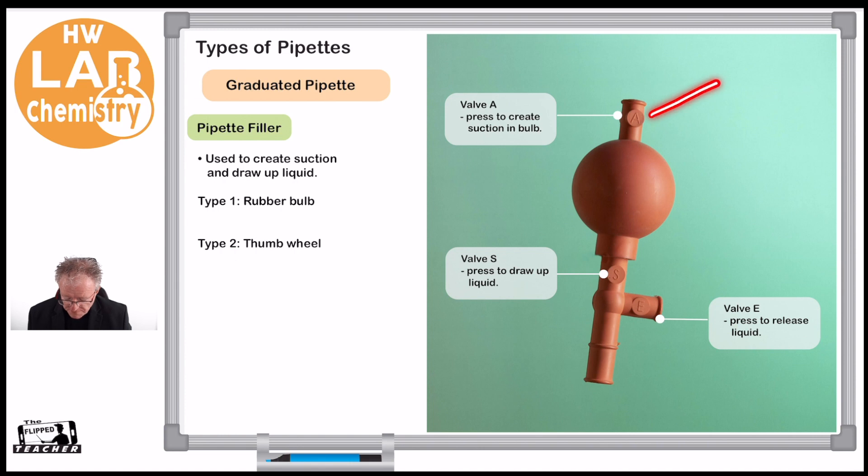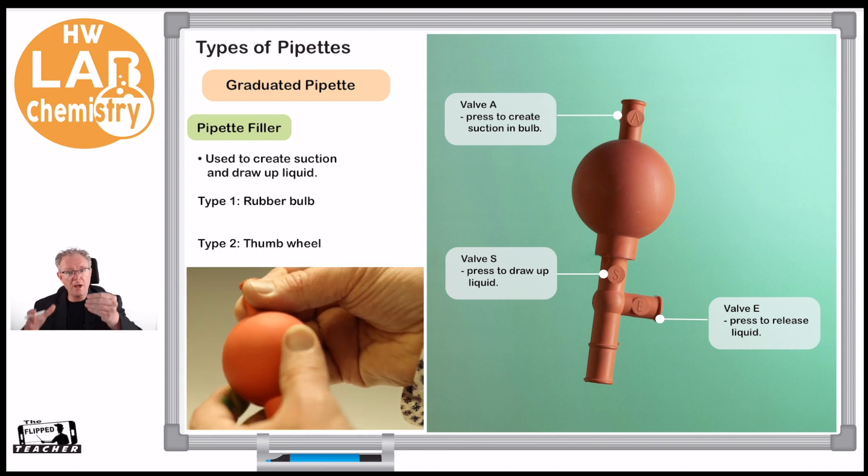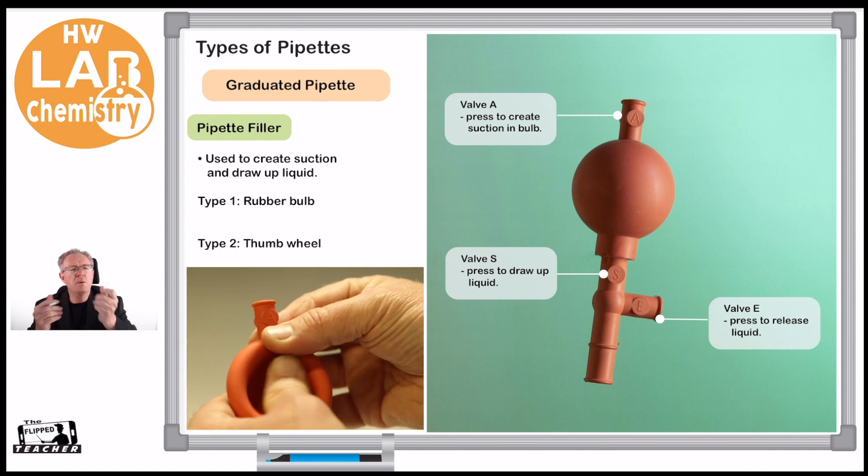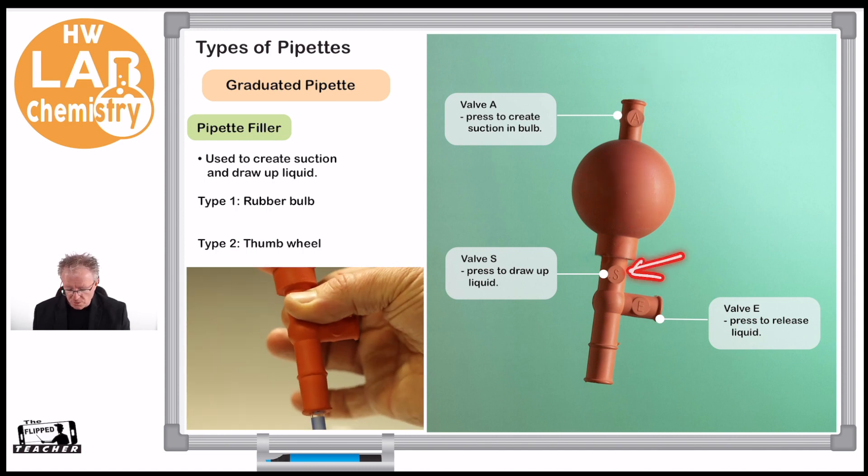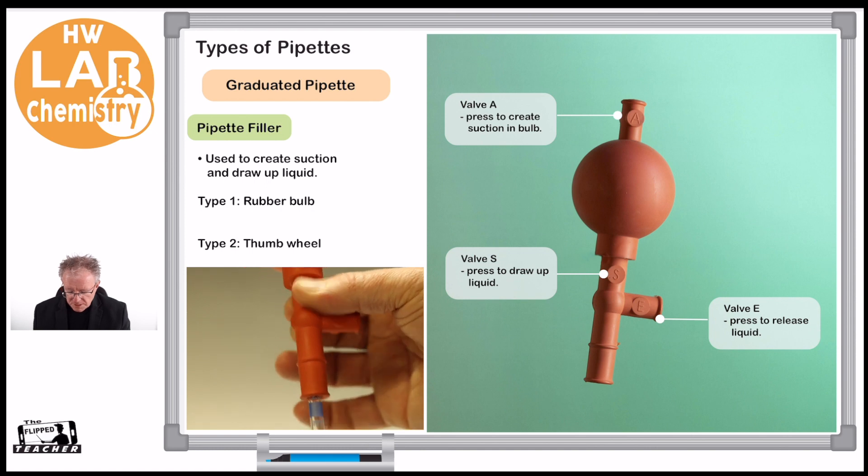So at the top here we press Valve A first. When we do that, we squeeze the bulb, and what we're doing is releasing air from the top and creating a vacuum inside. Then we can use S—S stands for sucking up the liquid.